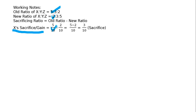Now we calculate X's sacrifice or gain: old ratio is 5/10, new ratio is 2/10. LCM is 10, so 5 minus 2 upon 10 equals plus 3/10. Since it is positive, X is sacrificing.